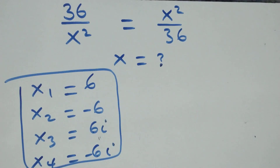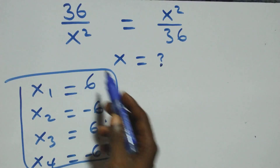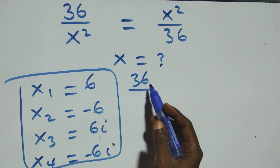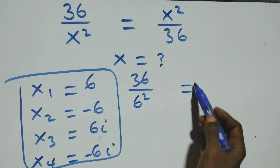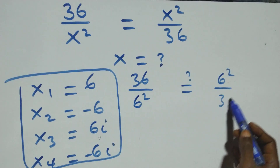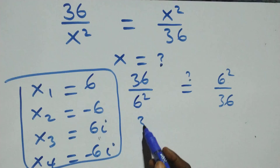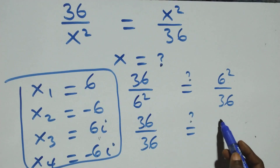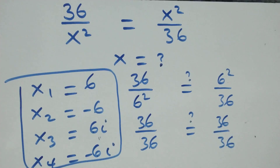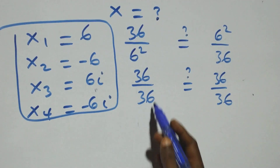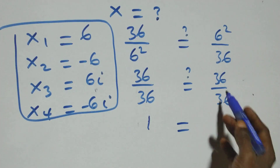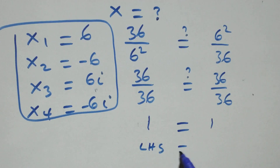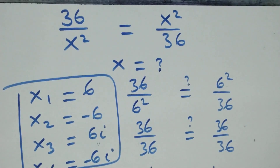Let's check if x = 6 satisfies the given problem. Substituting, the equation becomes 36 over 6 squared equals 6 squared over 36. That is 36 over 36 equals 36 over 36, which is 1 equals 1. Left hand side equals right hand side, so x = 6 satisfies the problem.